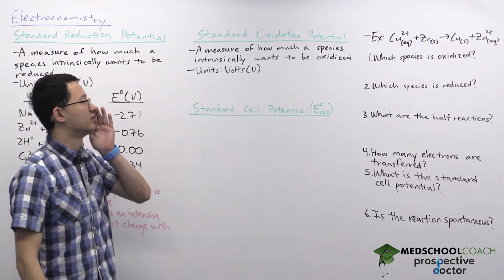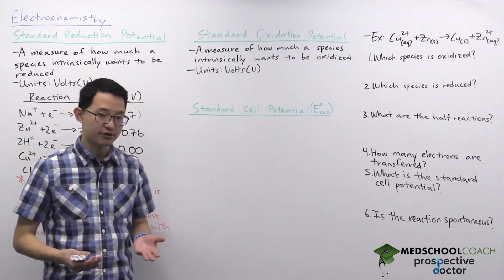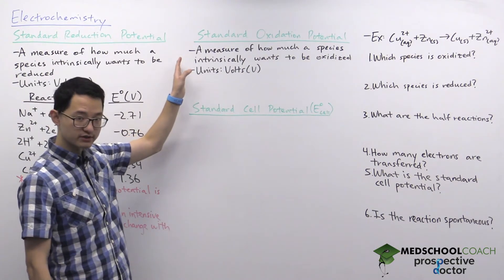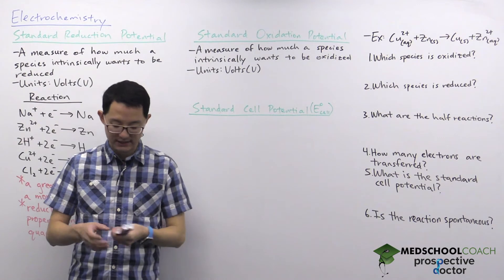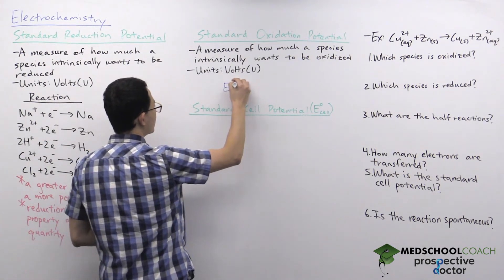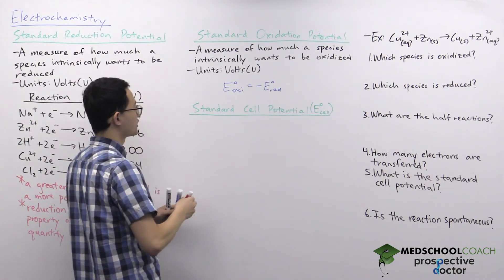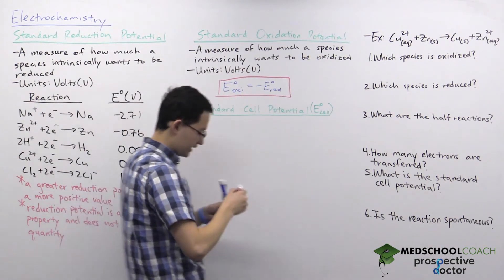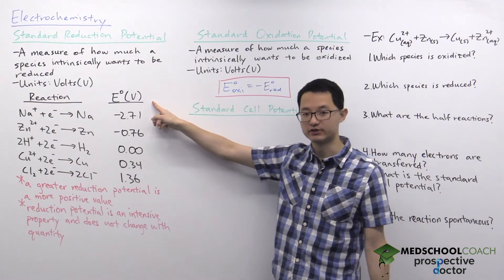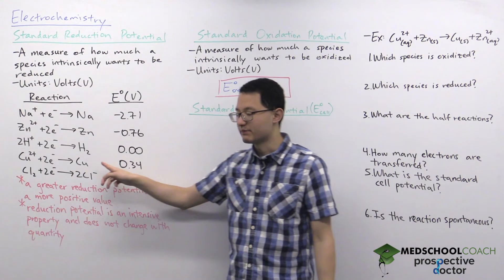The standard oxidation potential is very similar to the standard reduction potential except it's essentially the opposite. Instead of measuring how much a species wants to be reduced, the standard oxidation potential measures how much a species wants to be oxidized, and it also has units of volts. The standard oxidation potential is simply the negative — the opposite — of the standard reduction potential. You need to be a little careful because a table might not specify whether the values listed are standard oxidation or standard reduction potentials.